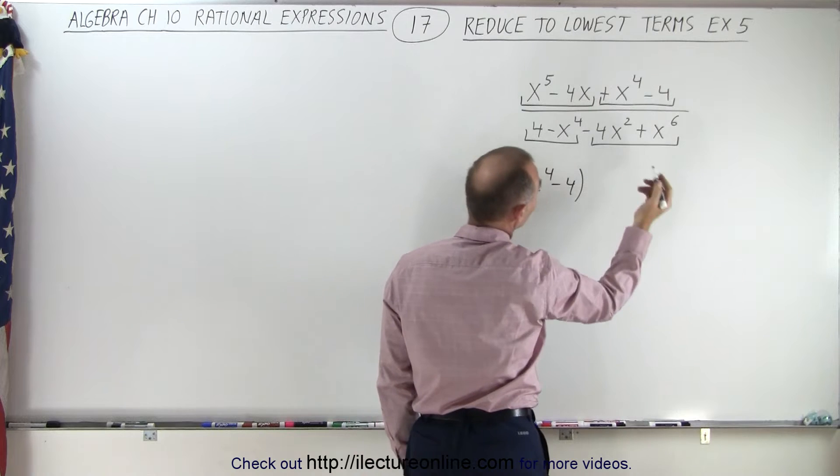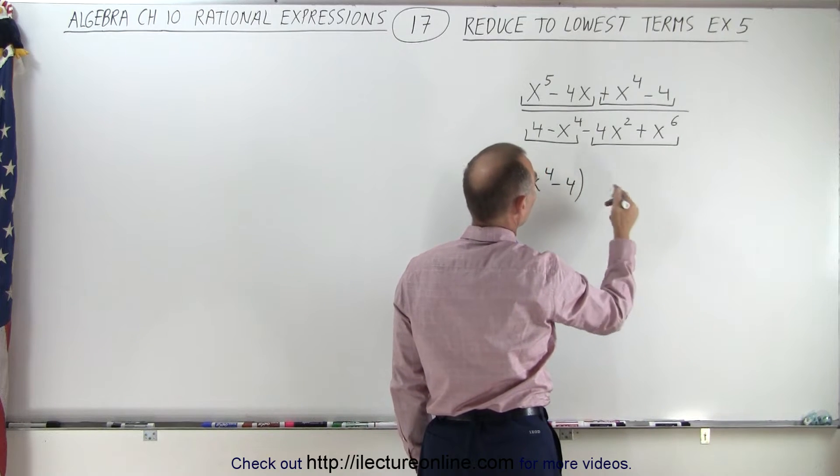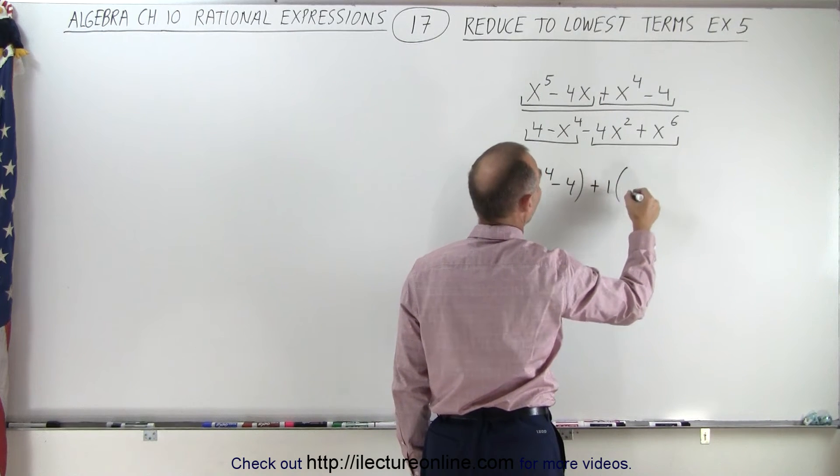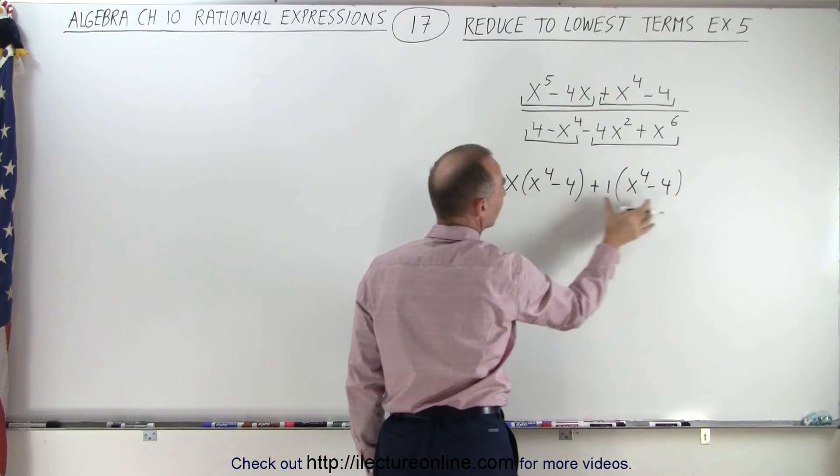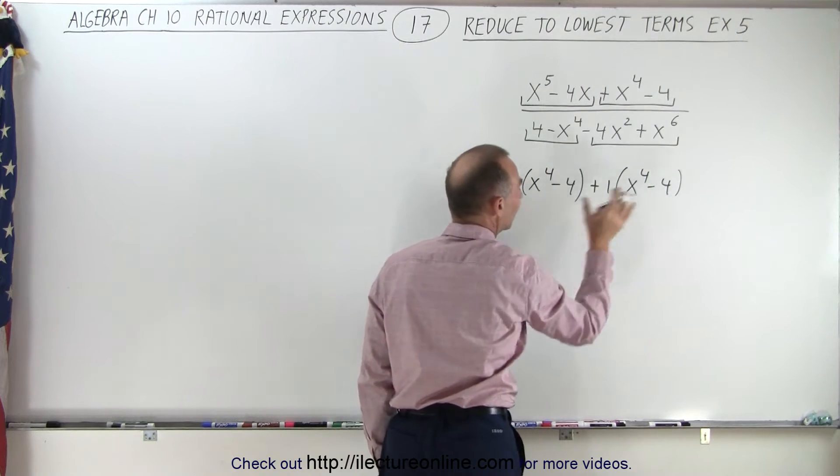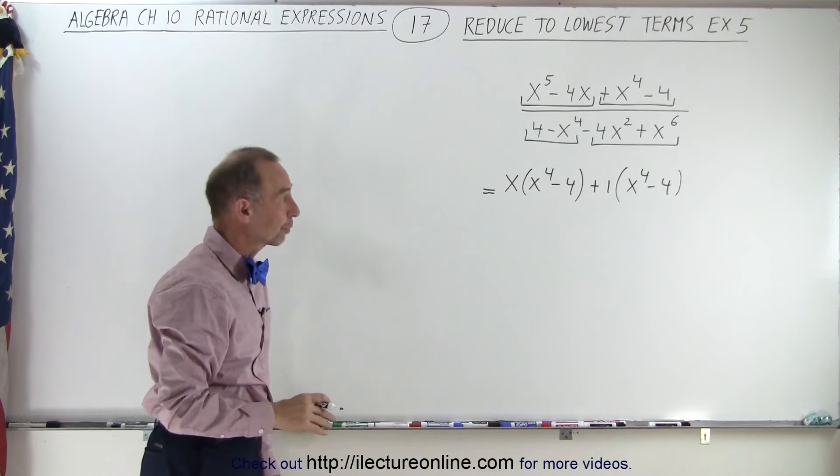Here it looks like there's nothing to factor out, so we'll just go plus one times x to the fourth minus four, because then we notice that the two terms that are remaining contain a common factor of x to the fourth minus four.